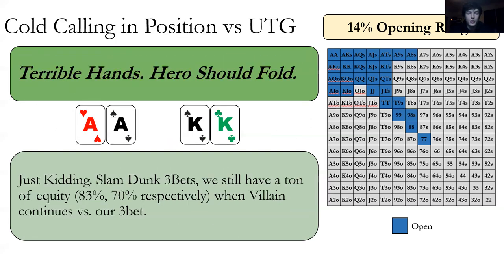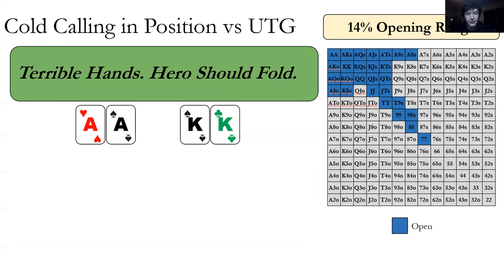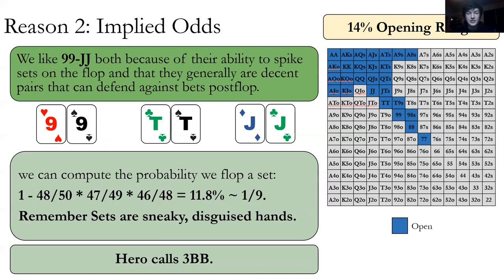So that's reason one — we're considering a call because we're doing good enough. Reason two: implied odds. We like nines through jacks both because we can spike sets — we've got those implied odds — and also because they're just decent pairs. We can defend against beats post-flop. Pocket jacks could be an overpair, for example, if the board comes two-four-seven. Sets are sneaky and disguised. We like sets. So it's definitely an easy call.